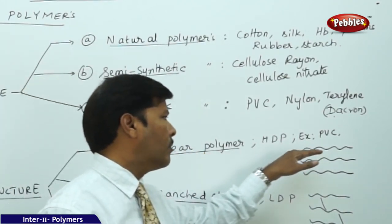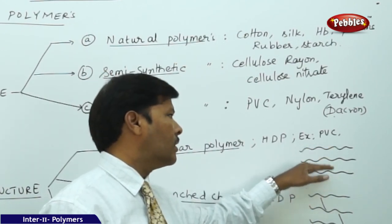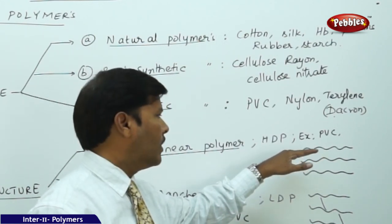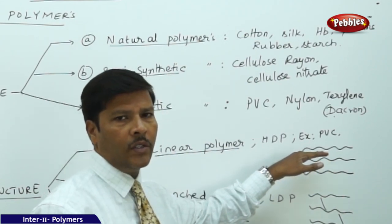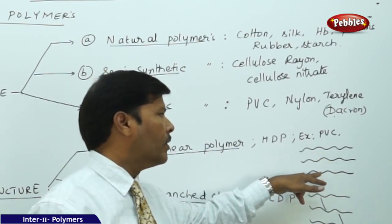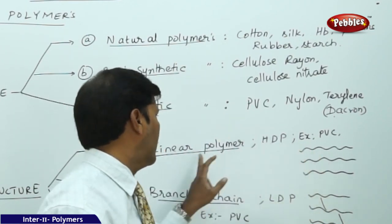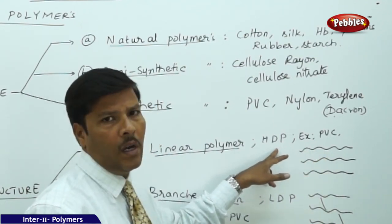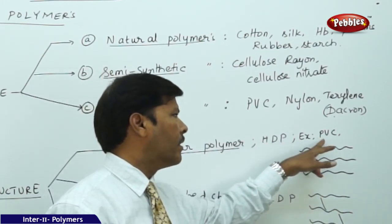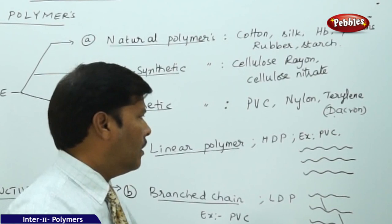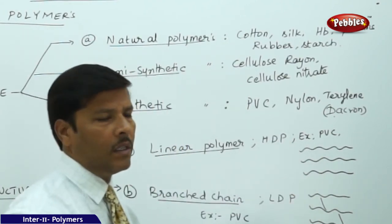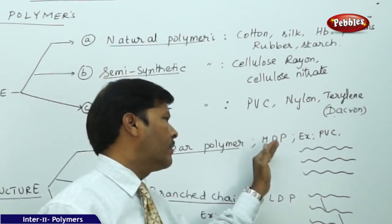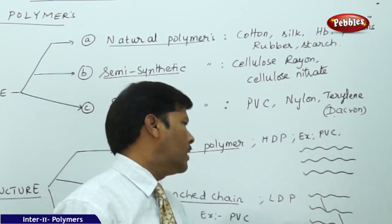In linear polymers, all the monomer units add against each other to form building blocks and then linear polymeric chains. When the polymeric chains are linear, the polymer obtained is called a high density polymer — for example, polyvinyl chloride. High density polymers are not elastic or stretchable.